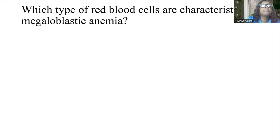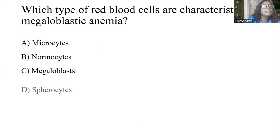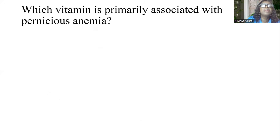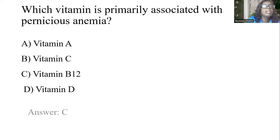Which type of red blood cells are characteristic of megaloblastic anemia? A, microsize. B, normal size. C, megaloblasts. D, spherocytes. And the answer is C, megaloblasts. Which vitamin is primarily associated with pernicious anemia? A, vitamin A. B, vitamin C. C, vitamin B12. D, vitamin D. And the answer is C, vitamin B12.